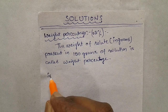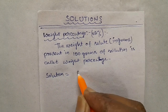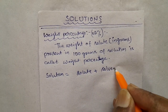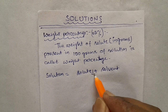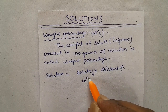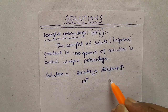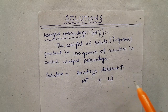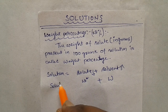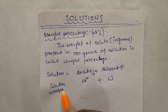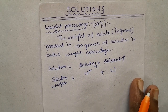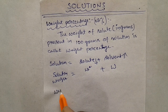For example, solution is solute plus solvent. The weight percentage formula is the weight of solute divided by the total solution weight.